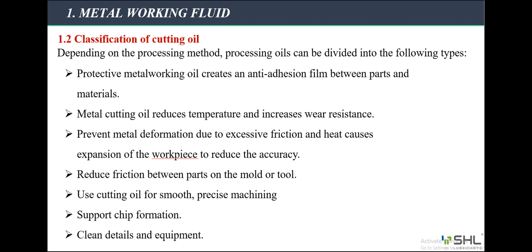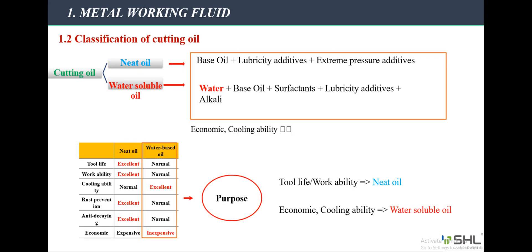Currently there are many types of metalworking oils, but they are mainly divided into two groups: water-based oils and non-aqueous oils. For neat cutting oil, its composition includes base oil, lubricity additives, and extreme pressure additives. The composition of water-soluble cutting oil includes water, base oil, surfactants, lubricity additives, and alkali. Depending on the processing method and technical requirements, people choose the type of cutting oil. Looking at the comparison table of neat oil and water-soluble cutting oil, we can see the advantages and disadvantages of each type.